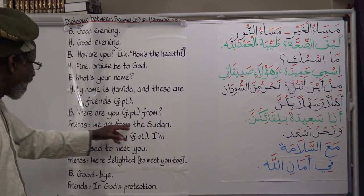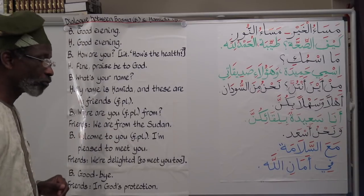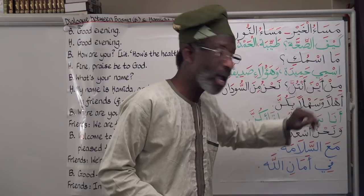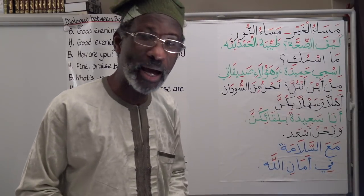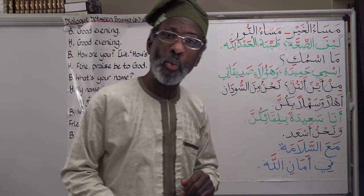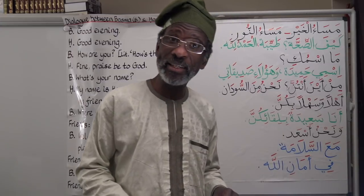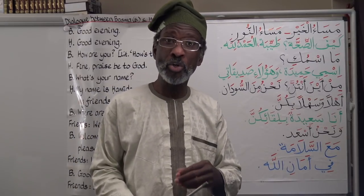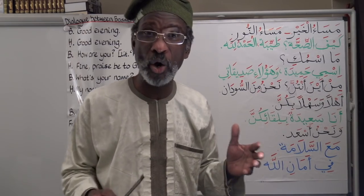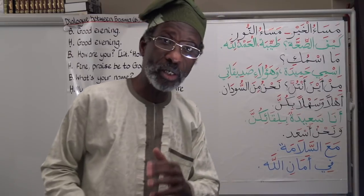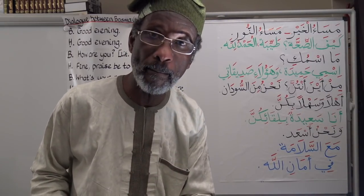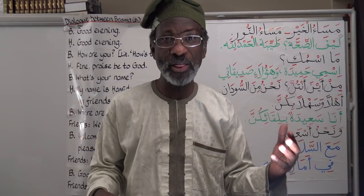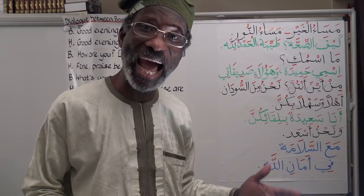'Min aina antunna?' — where are you from? 'Antunna' is a detached pronoun (domir munfosil) meaning 'you' for three or more females. For boys we say 'min aina antum', but for three or more girls we say 'min aina antunna?'